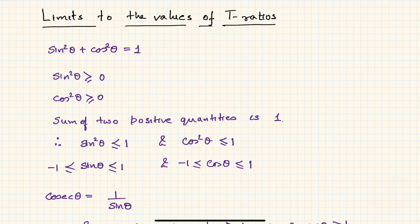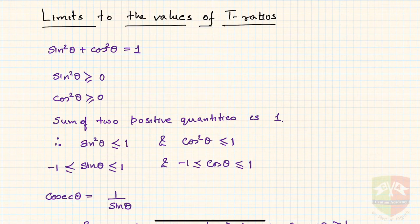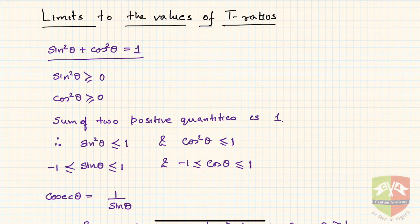Hello friends, we are going to discuss a new topic: limits to the values of trigonometric ratios. We are going to understand what are the values, or the range of values, all the six trigonometric ratios can take. We start with the identity sin²θ + cos²θ = 1, and we are first trying to arrive at the range of values sine theta can take.